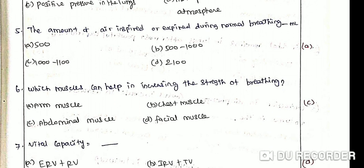Which muscle can help in increasing the strength of breathing? Option A: Arm muscle. Option B: Chest muscle. Option C: Abdominal muscle. Option D: Facial muscle. The correct answer is Option C: Abdominal muscles. We have the ability to increase the strength of inspiration and expiration with the help of additional muscles called abdominal muscles. This is called forceful breathing.